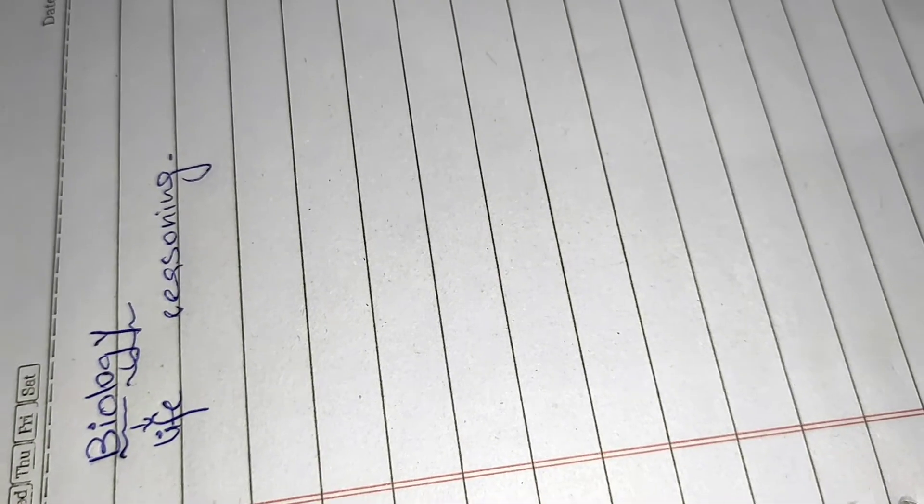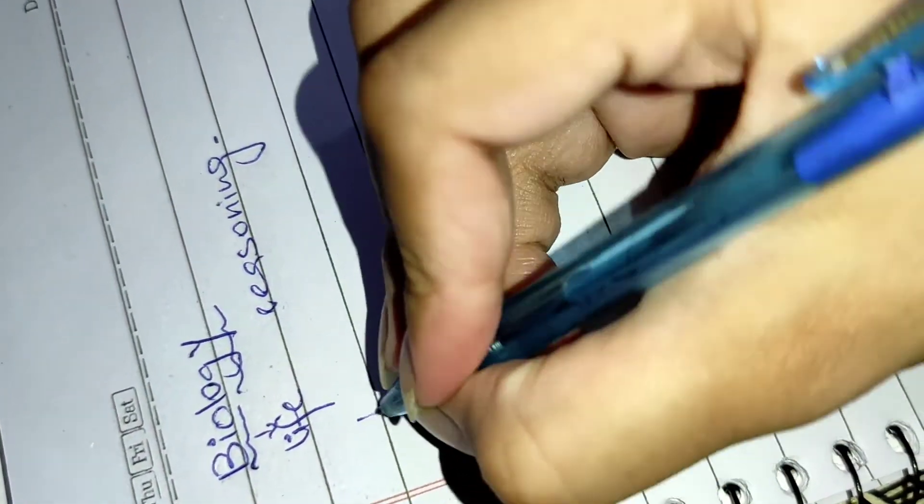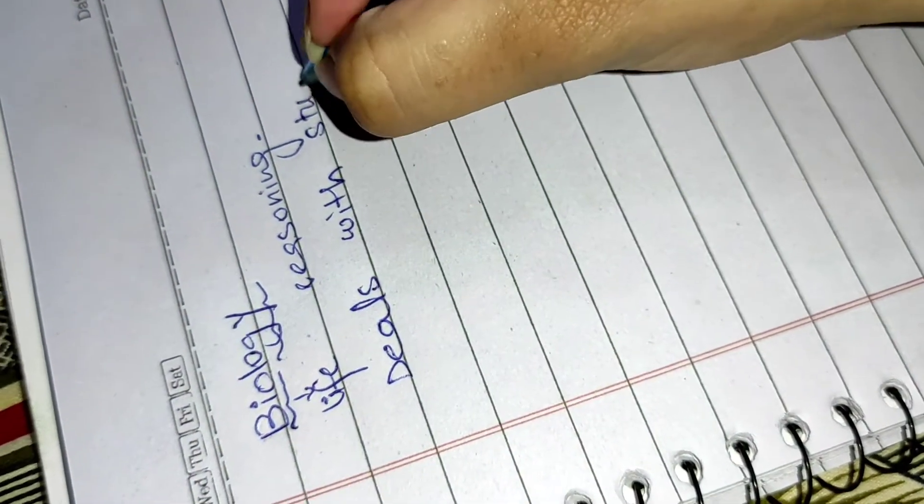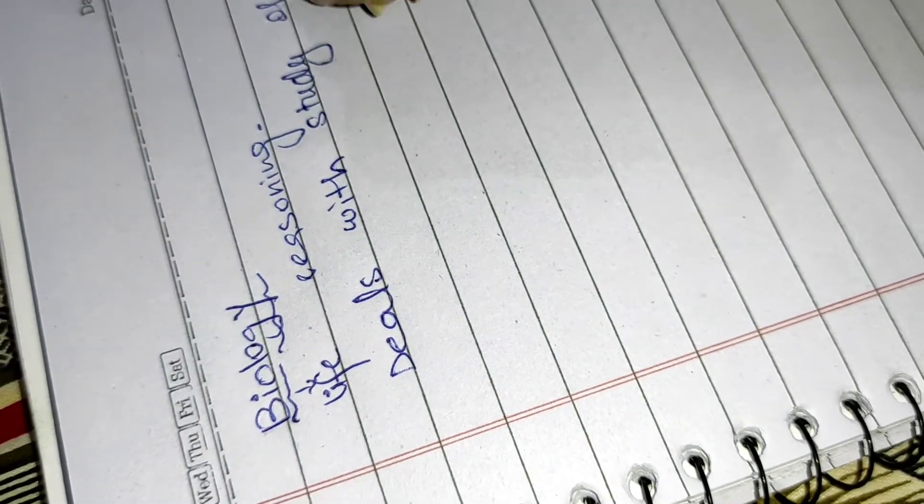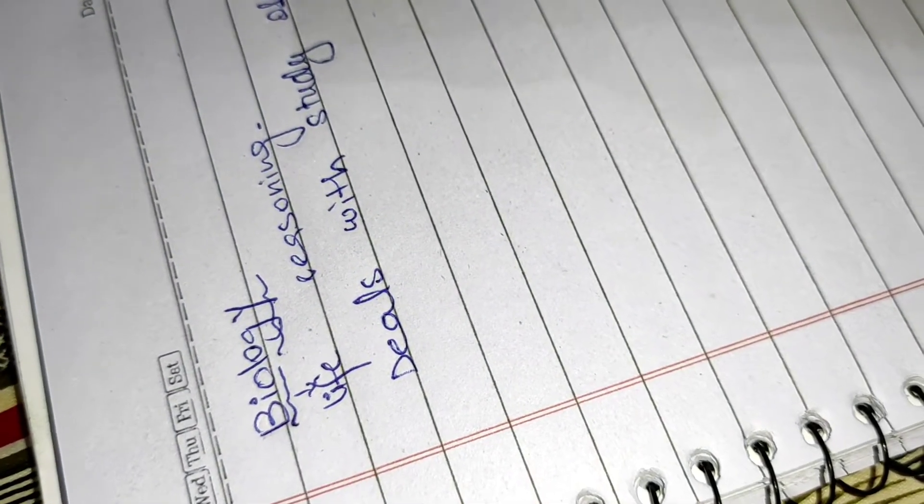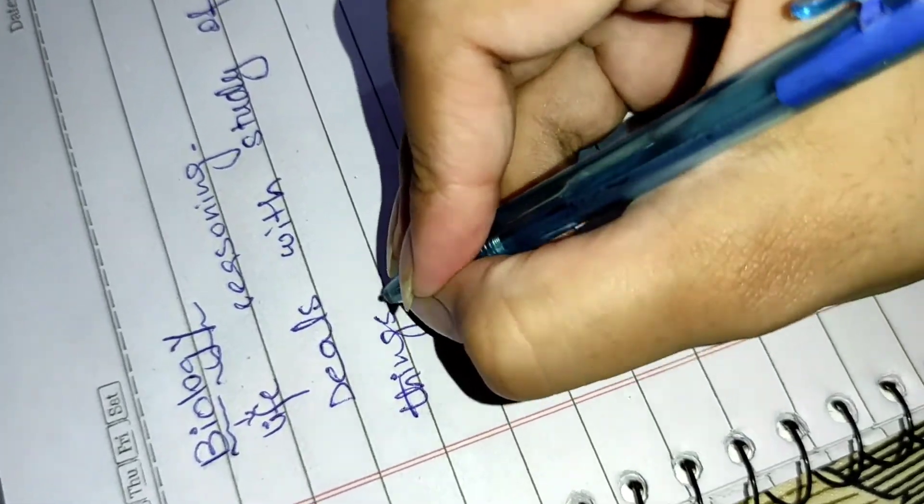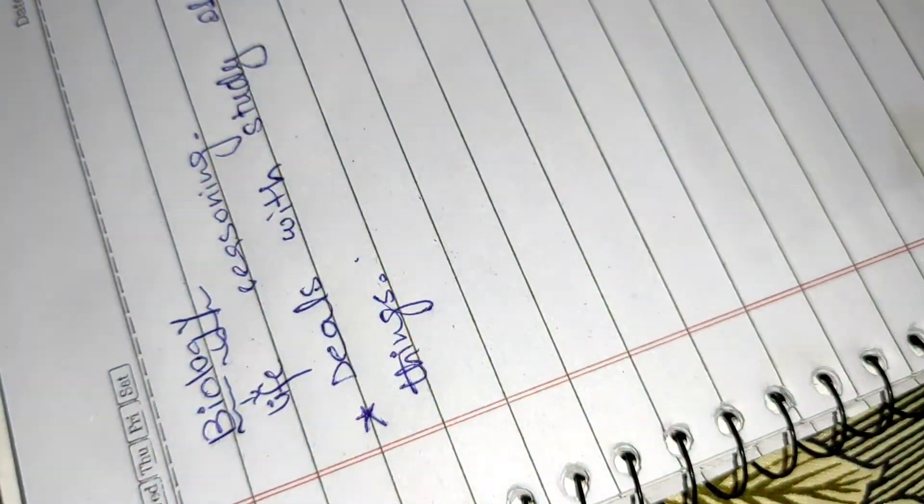Now we'll move on to the topic. As we know, we have studied in previous classes that the word bio means life and logic means reasoning or living things. Now we can say that biology is a science branch that deals with the study of living things.